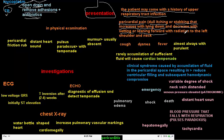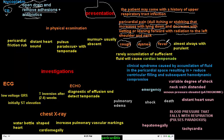An important differentiator: in pancreatitis, leaning forward aggravates the pain, whereas in pericarditis, leaning forward decreases it (but lying down increases it). The pain radiates to the left shoulder and neck. Other symptoms include cough, dyspnea, and fever — especially in bacterial or purulent pericarditis.